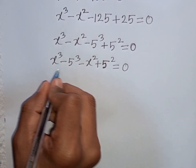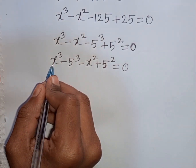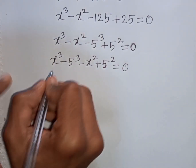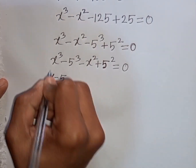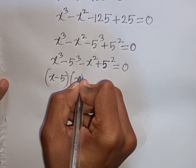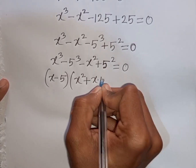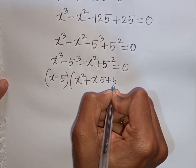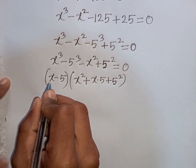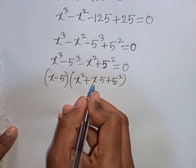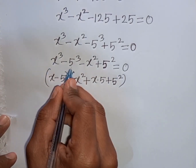Now here I can apply the formula of a cube minus b cube. Here a is x, b is 5. So according to the formula I can write here: x minus 5, times x square plus x times 5 plus 5 square. That means a minus b times a square plus ab plus b square — this is the formula of a cube minus b cube.